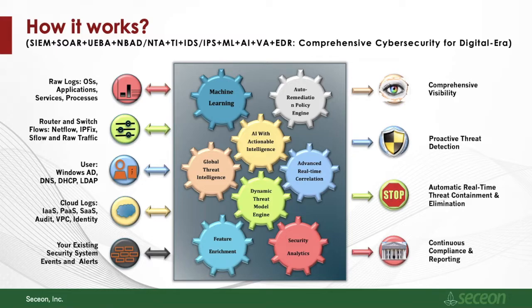All of your cloud data — which includes cloud logs, flows, and identities — is also supported, covering all major clouds. Any existing security infrastructure you have is also integrated into the platform. Once that data comes in, the platform extracts 850 features and has 22-plus million enrichment records, and then machine learning and AI with actionable intelligence and dynamic threat models work on the data sets to bring context and situational awareness.